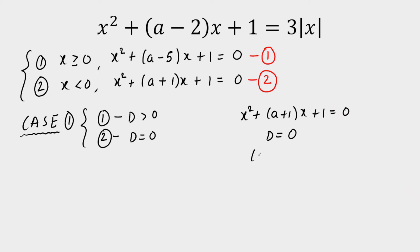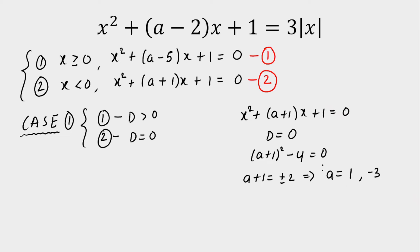D equals B squared minus 4AC, so (A plus 1) squared minus 4 is equal to 0. From here, A plus 1 is equal to plus or minus 2. So the two values of A are: A is equal to 1, and for minus 2, A is equal to minus 3. We are getting two values of A: A equals 1 and A equals minus 3.